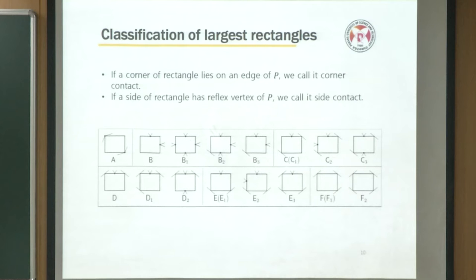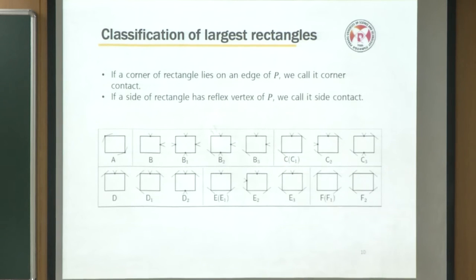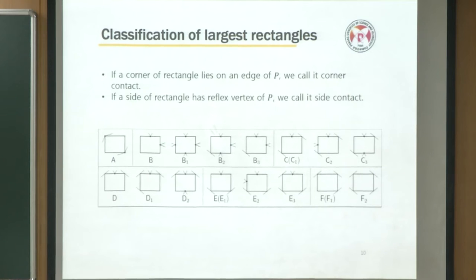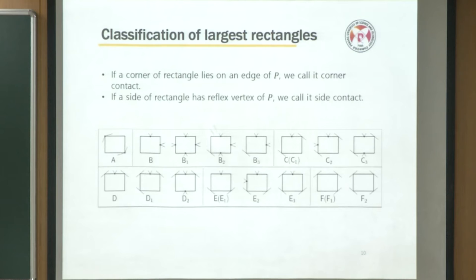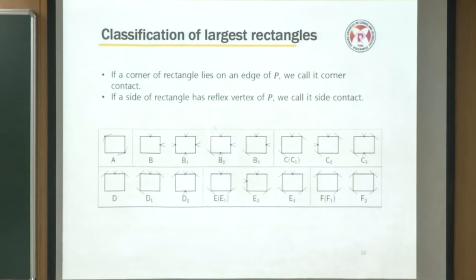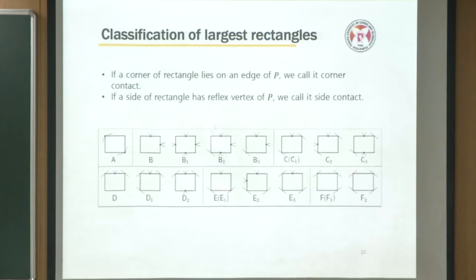We call the intersection of a rectangle and the polygon boundary a 'contact.' There are two types of contacts: a corner contact, which is the intersection that lies on the corner of the rectangle, and a side contact, which is where the intersection lies on the side of the rectangle. Here is the six-type classification. Note that type A and type F have no side contacts, while all other types contain side contacts.